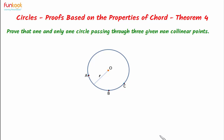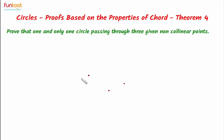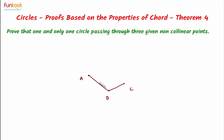Let's discuss the approach for proving this. Let's take three non-collinear points and name them A, B and C, and let's see if we can draw a circle passing through all three points. Now let's connect A, B and B, C. If we have a circle passing through points A, B and C, then AB and BC will be chords of the circle. Now let's draw the perpendicular bisectors of AB and BC.